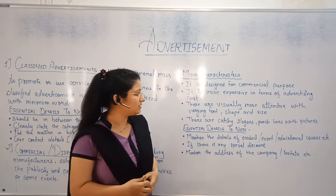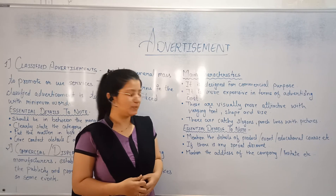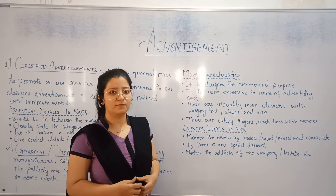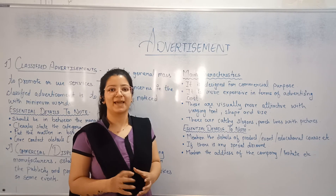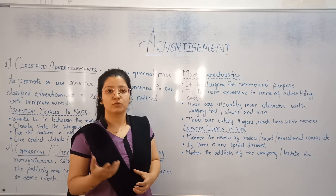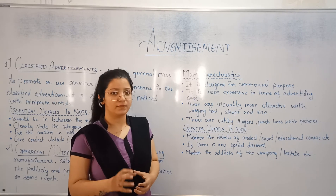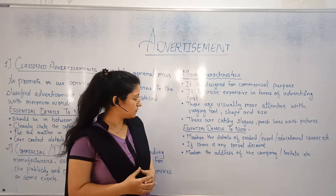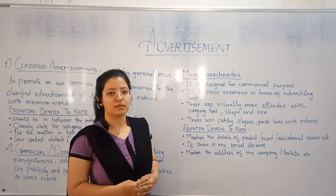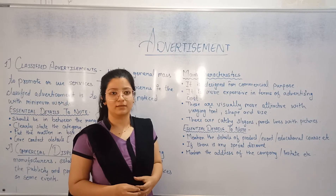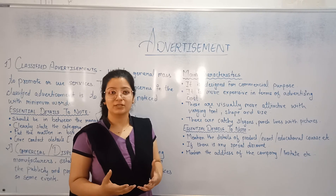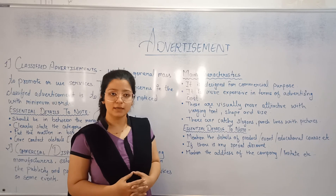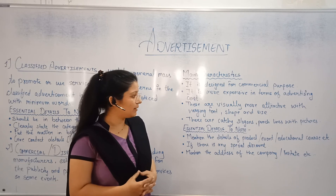Essential details to note in commercial advertisements are: mention the details of the product, event, and educational course. You have to give complete details whether it is for a product, event, or educational course. If there is any special discount, it should be clearly mentioned — for example, a 20% discount. Last, mention the address of the company or institute.